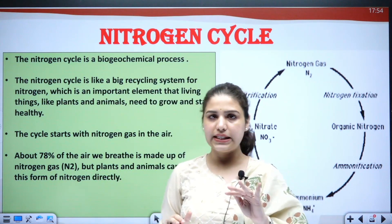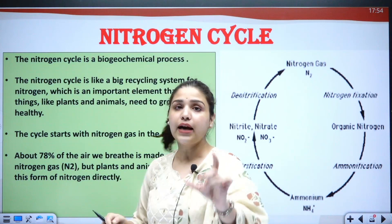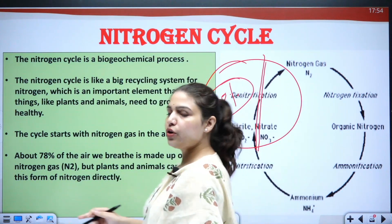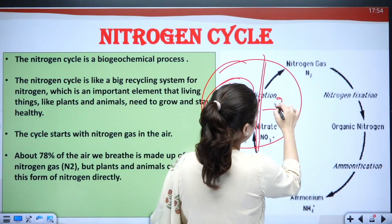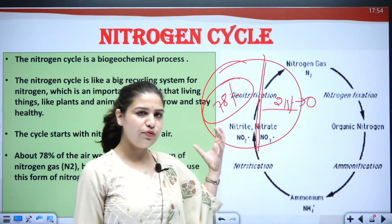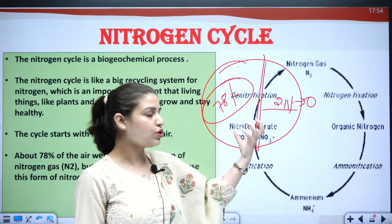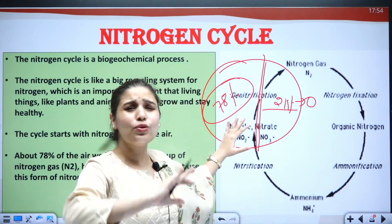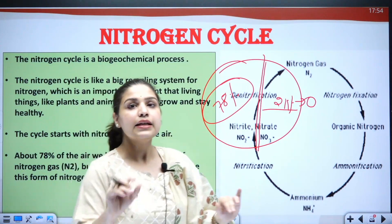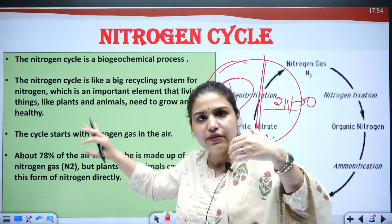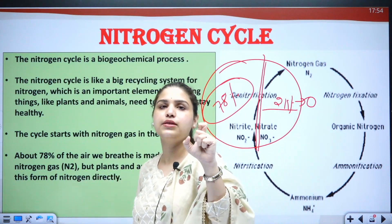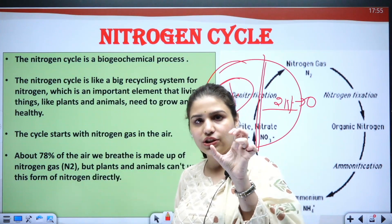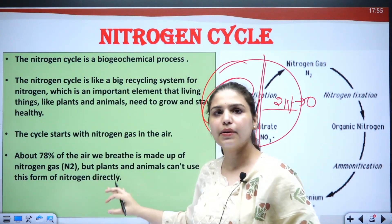Nitrogen is present in abundance in our atmosphere — almost 78 percent of the atmosphere constitutes nitrogen, and then 21 percent comprises oxygen. The rest includes other components like carbon, argon, and various other things. However, even though nitrogen is present in such abundance, the form in which it exists in the atmosphere is not directly usable by plants and animals.